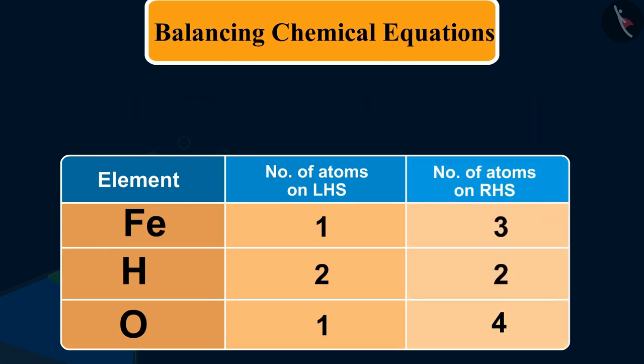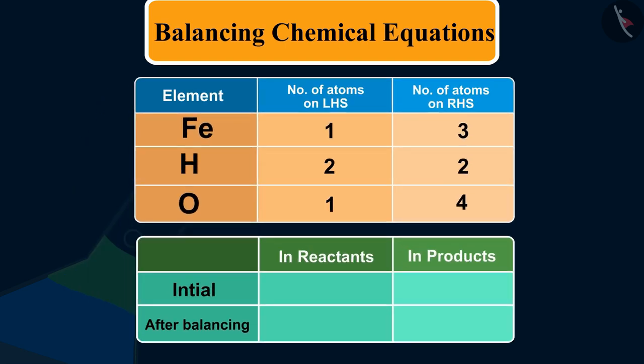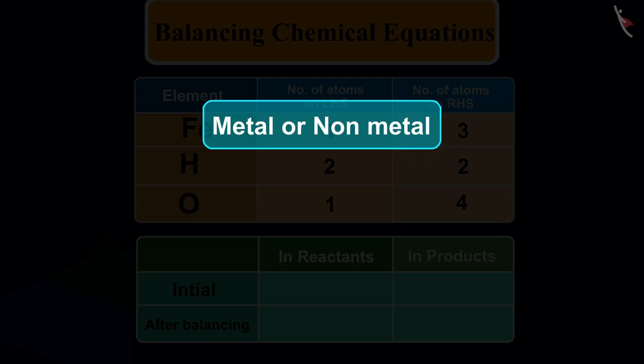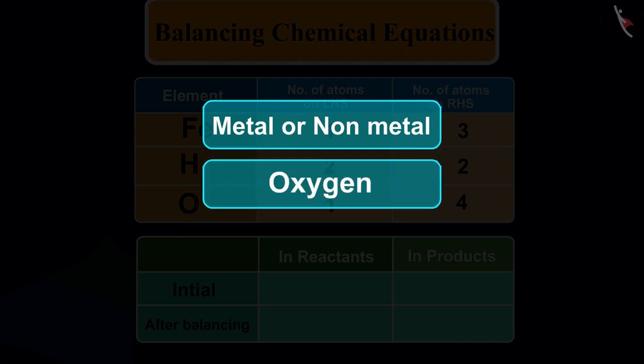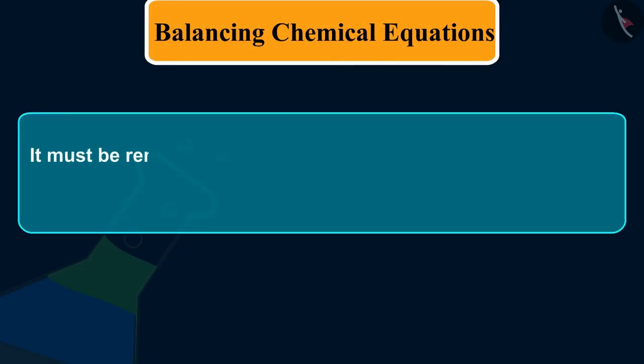It is often convenient to start balancing with the compound that contains the maximum number of atoms, or we can also balance the metal or non-metal first, then oxygen and hydrogen. It must be remembered that we cannot alter the formulae of the compounds or elements involved in the reactions.